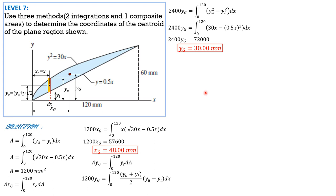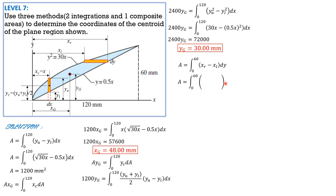For the second solution using horizontal strips: right X and left X, thickness DY, variable of integration Y with limits from 0 to 60. Area equals the integral of (right X minus left X) DY. Right X is y/0.5 = 2y. Left X is y²/30. Using the calculator, area is 1,200 mm² — the same result as before.